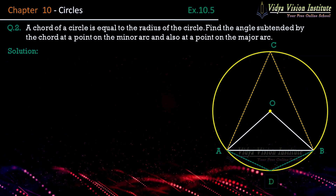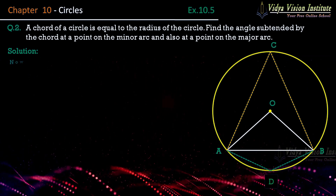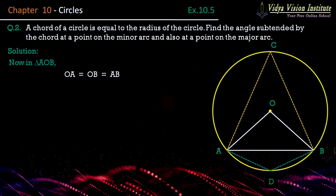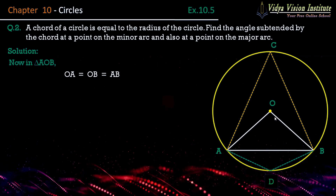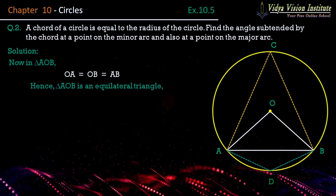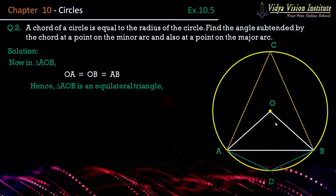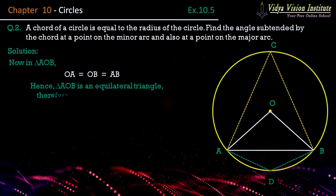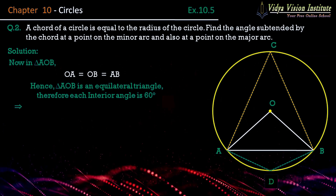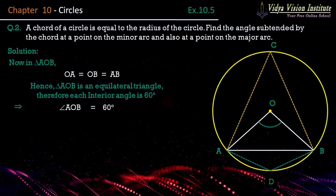Humko inhi dono angles ki value pata karni hai. Bahut hi simple question hai. Jaisa ki hum dekh sakte hain, in triangle AOB, OA is equal to OB is equal to AB — yeh teeno sides aapas mein barabar hain. Hence triangle AOB is an equilateral triangle. Jaisa ki hum jante hain that all angles in an equilateral triangle are 60 degrees, therefore angle AOB is equal to 60 degrees.